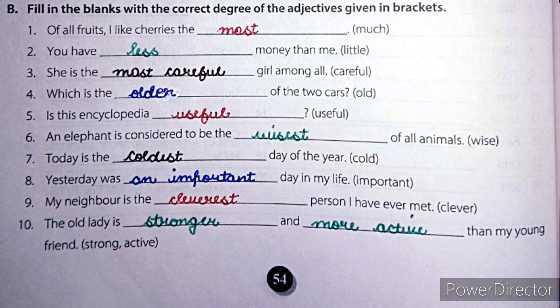But it is not always necessary. For example: which dress is better — the red one or the green one? Here comparative degree better is used because there is a comparison between two dresses, red or green. Here than is not used, yet we have used the comparative degree better.